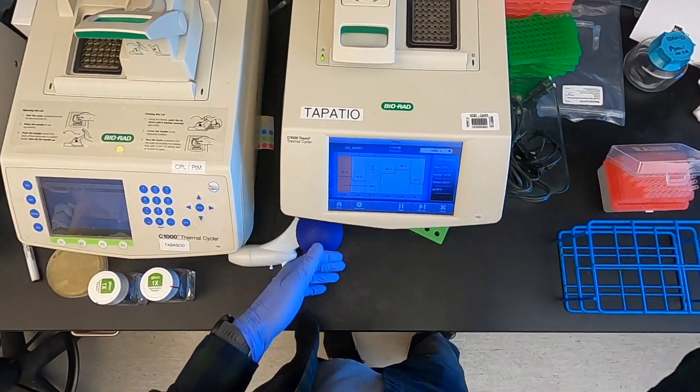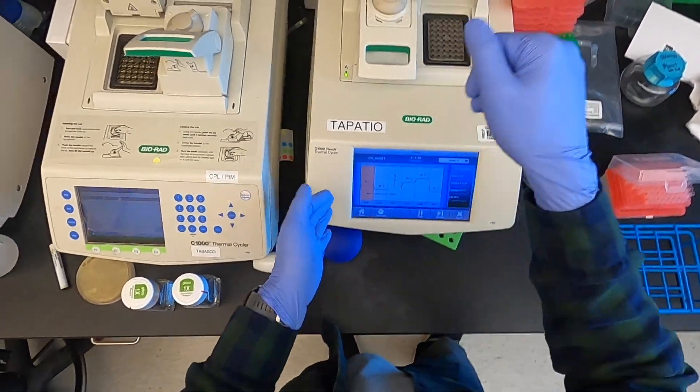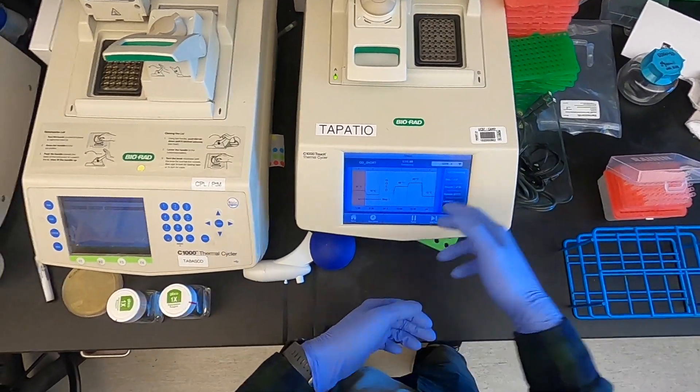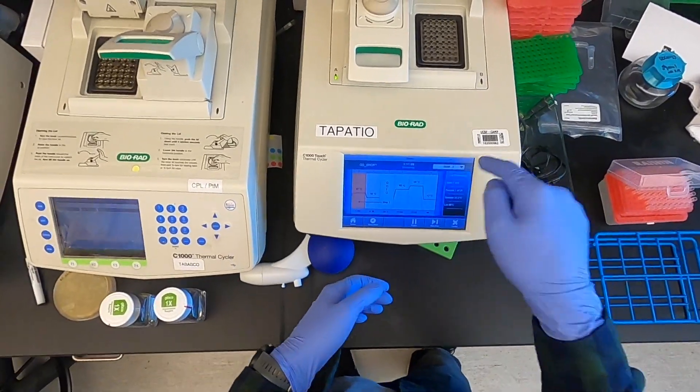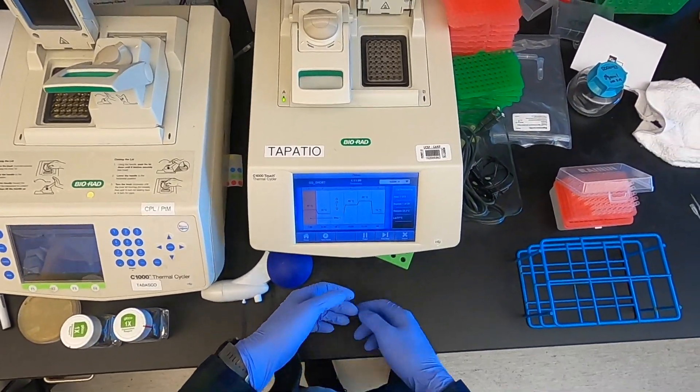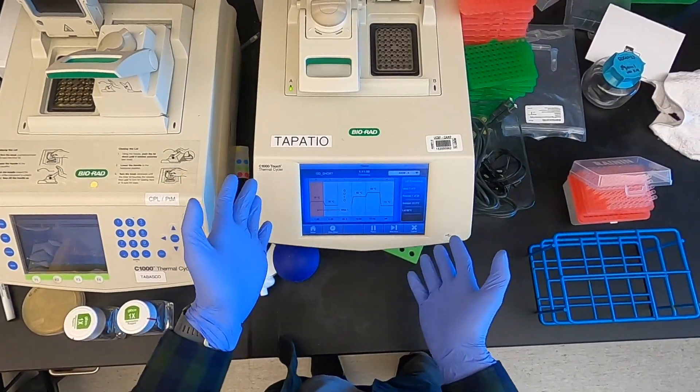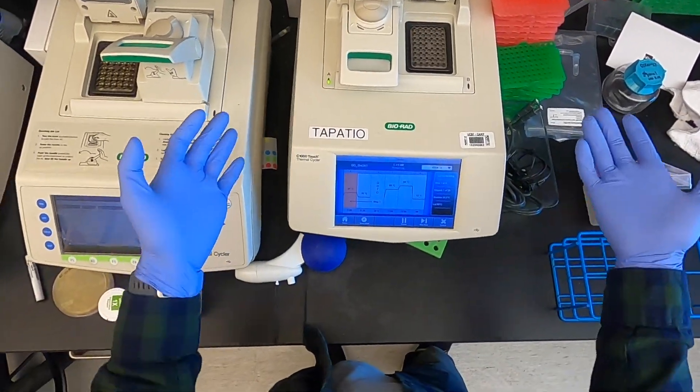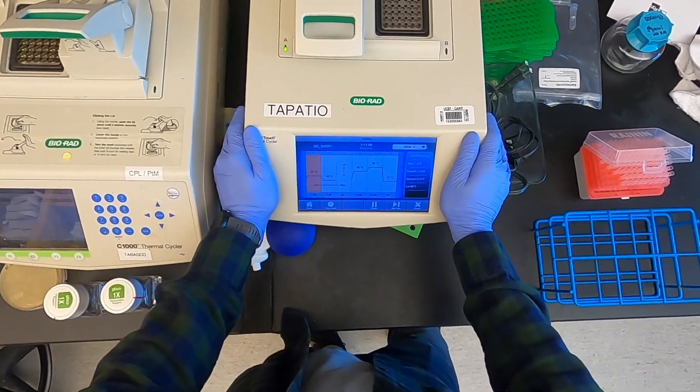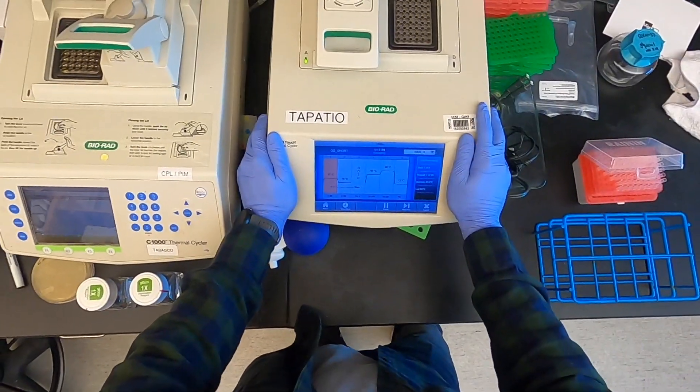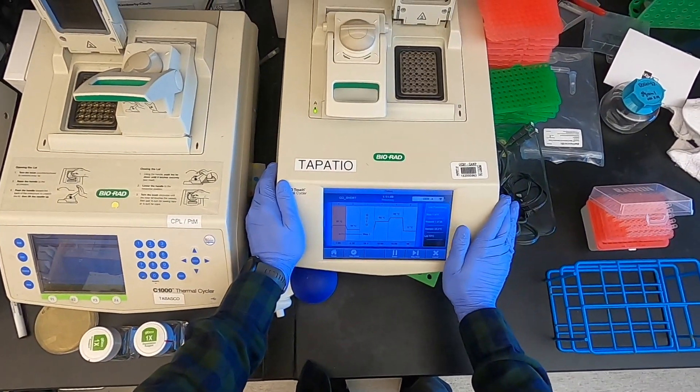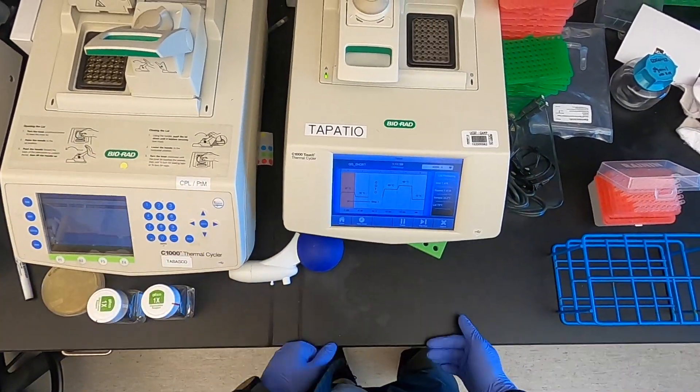This has happened to everyone and still happens to me sometimes where you put your tubes in the thermocycler, you select a protocol, hit run, and you just forget to select and confirm that volume before walking away. Then you'll come back expecting your run to be done and it won't be and you'll be sad. So yeah, just always make sure you get to that screen before walking away. And that's it. That's how you do a Golden Gate assembly.